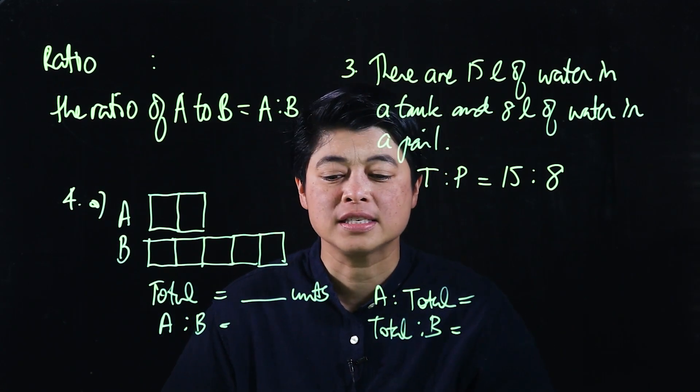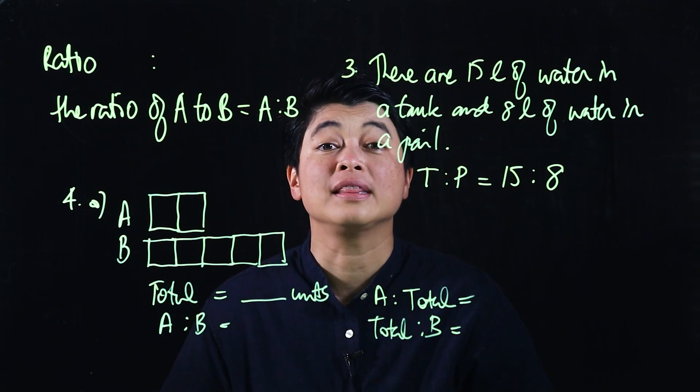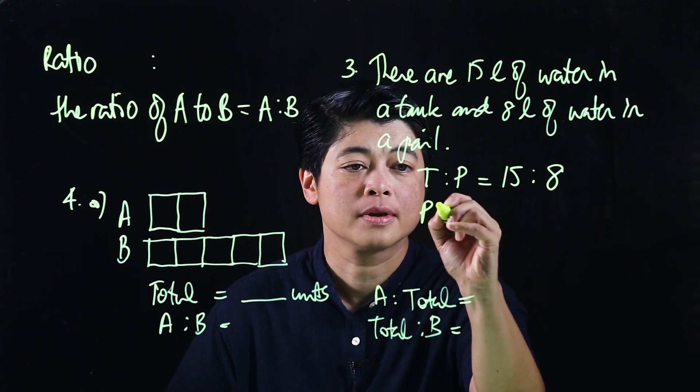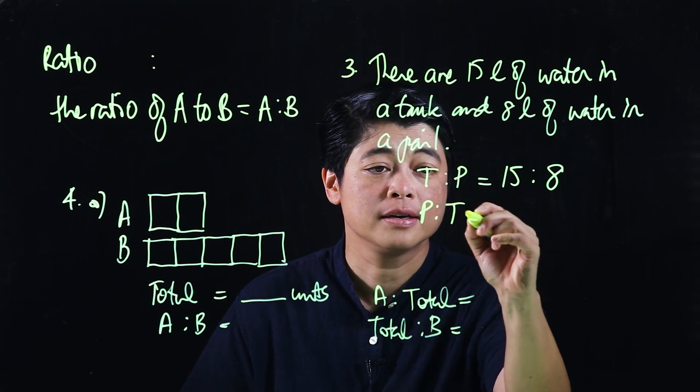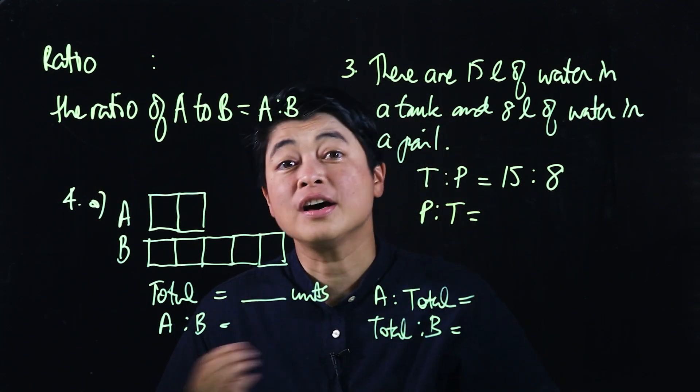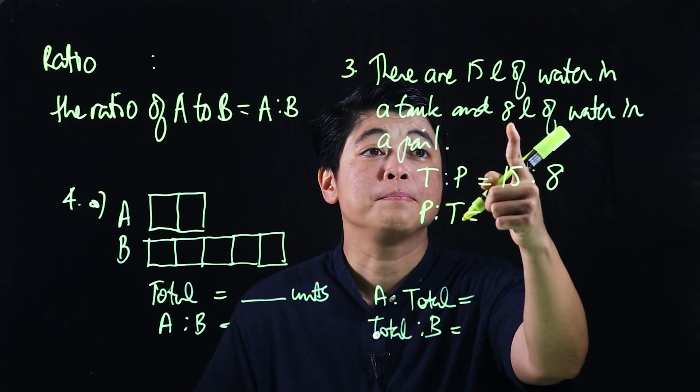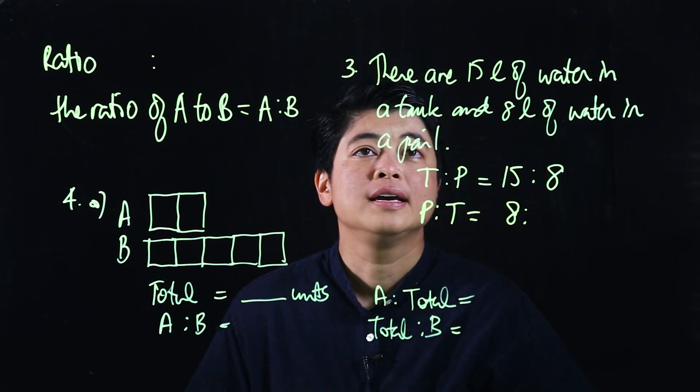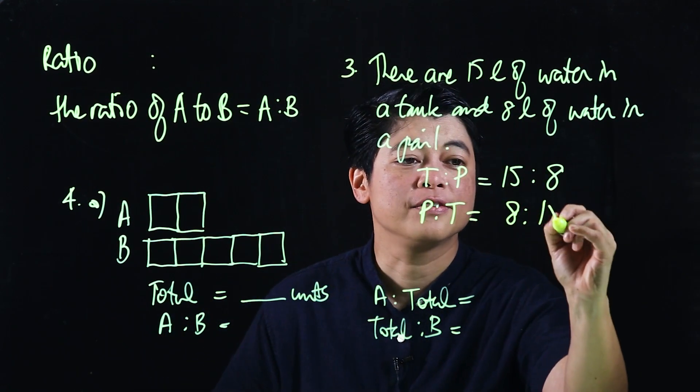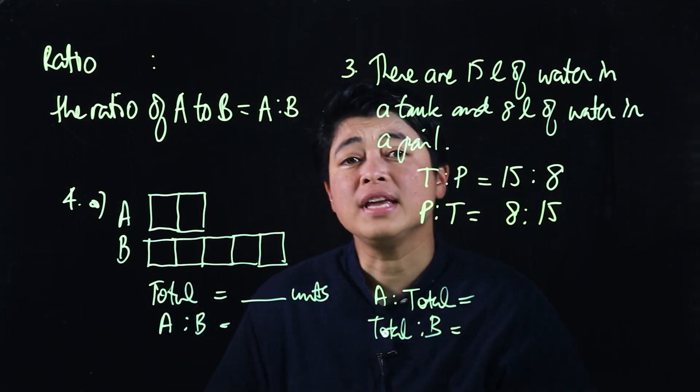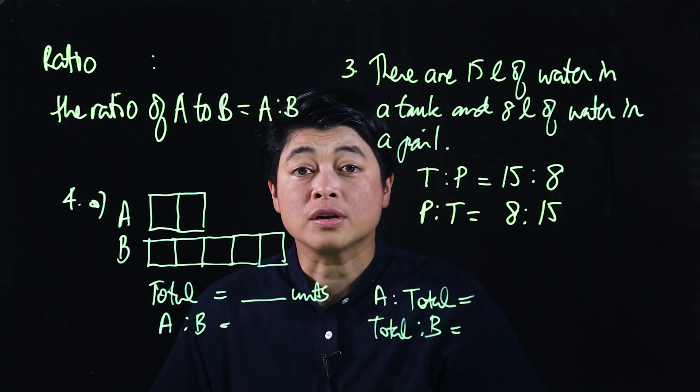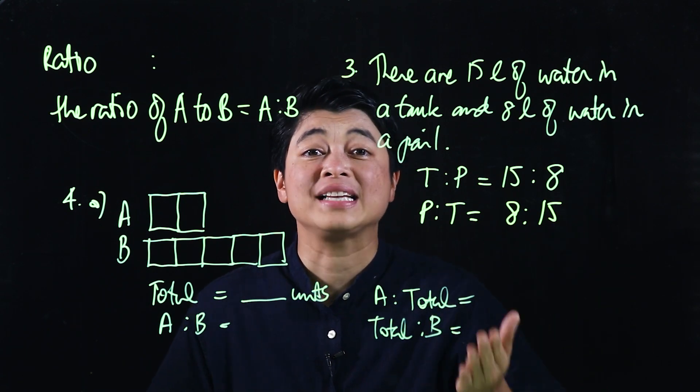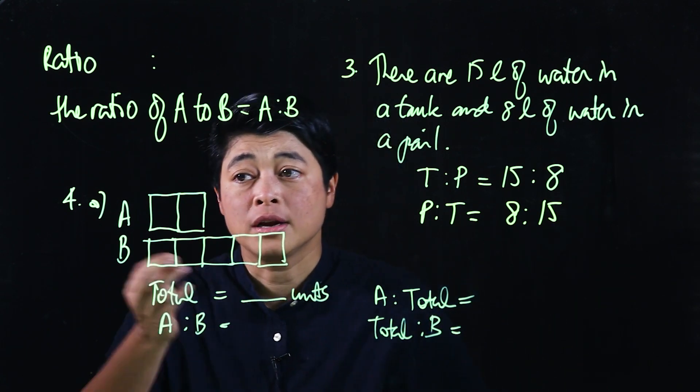The next question asks for the ratio of the amount of water in the pail to the amount of water in the tank. So it's the other way around: pail is 8, tank is 15. Both represent ratios, but the order of the ratio matters based on how it's stated.